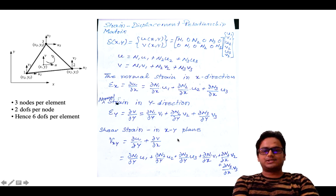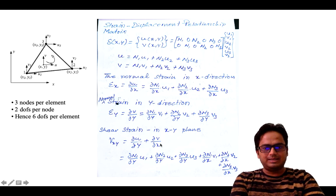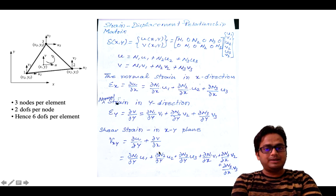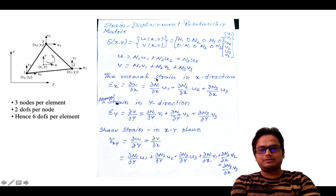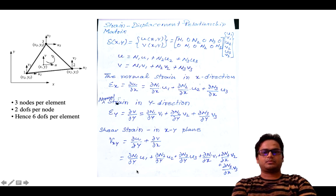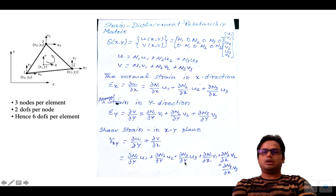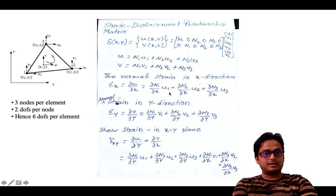The third term is our shear strain in the xy plane. The expression for shear strain gamma_xy is given by du/dy plus dv/dx. Taking the partial derivative of u with respect to y and v with respect to x, we get: dn1/dy·u1 plus dn2/dy·u2 plus dn3/dy·u3, plus the v terms.